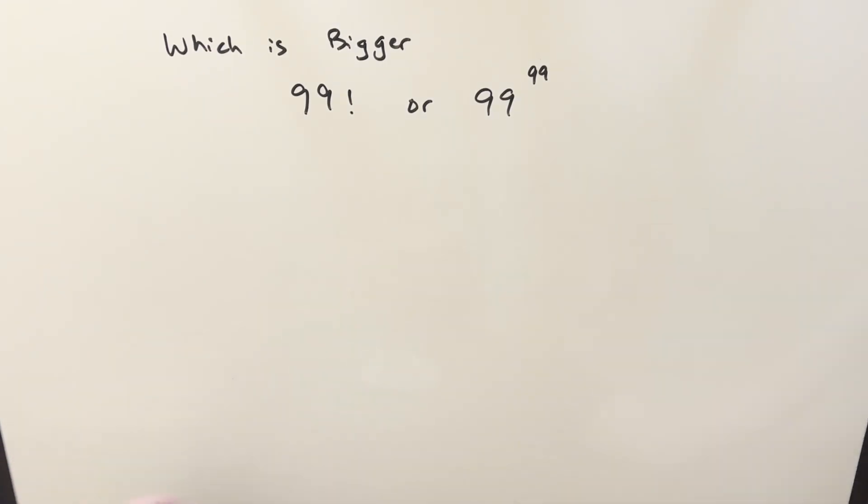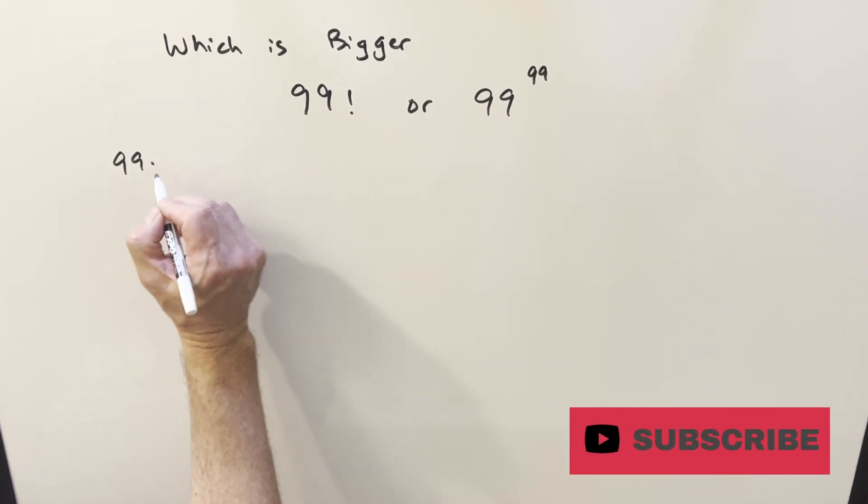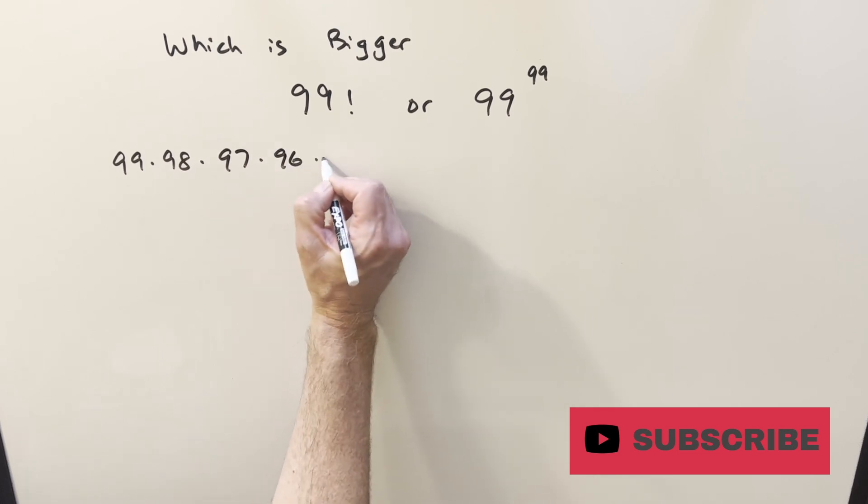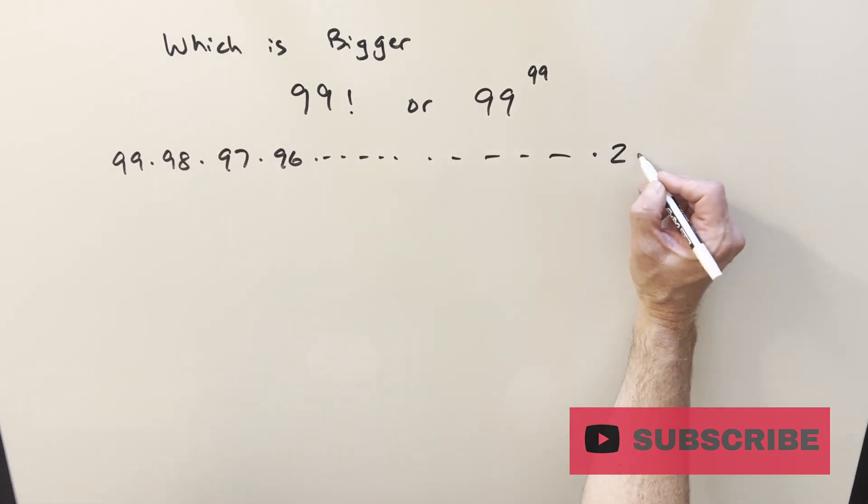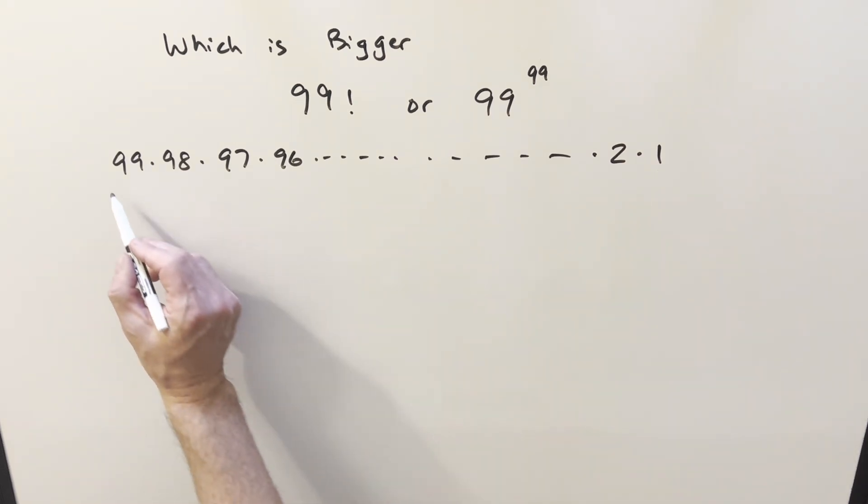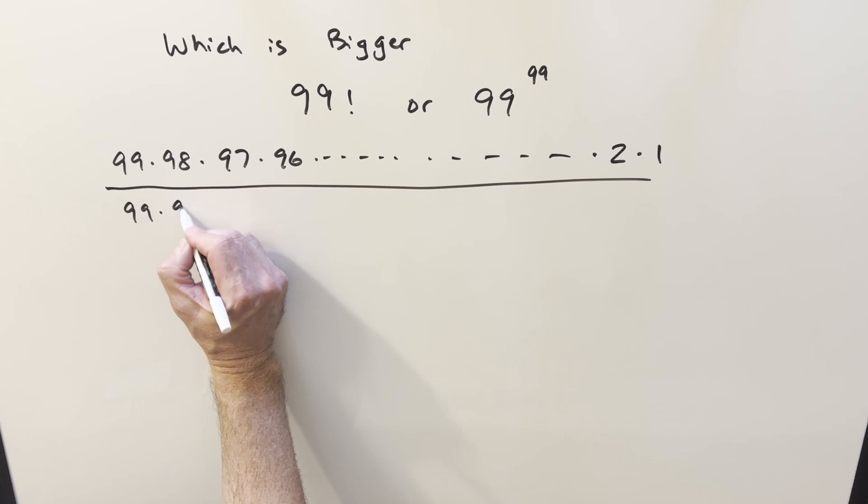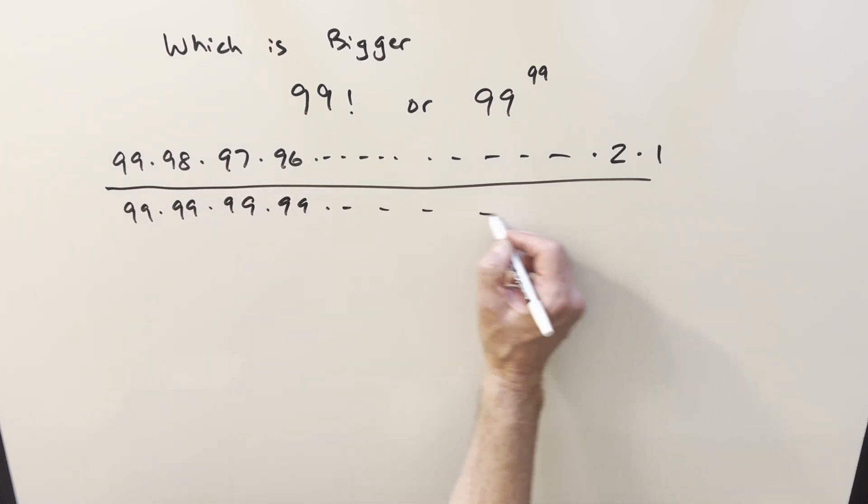So using that, let's just create a fraction out of this thing, so we'll do 99 factorial. What I'm going to do is start writing out terms. I don't feel like writing out all the terms but let's write out some terms. Eventually it's going to get down to like 2 times 1, and then creating a long fraction for 99 to the 99. This is just gonna be 99 times 99 times 99 all the way to the end.